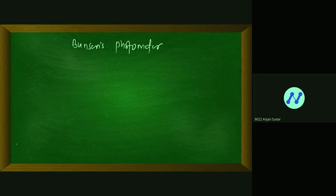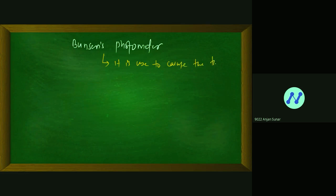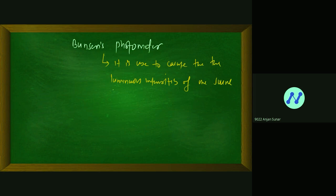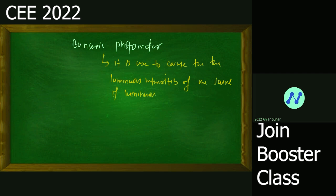The luminous intensity of one source — if the luminous intensity of the other source is none, it is used to calculate the luminous intensity of one source if the luminous intensity of the other source is known.